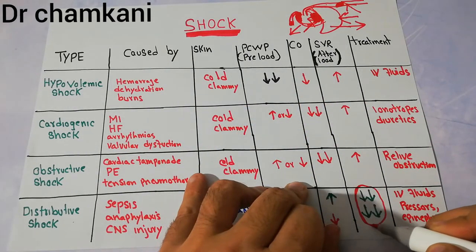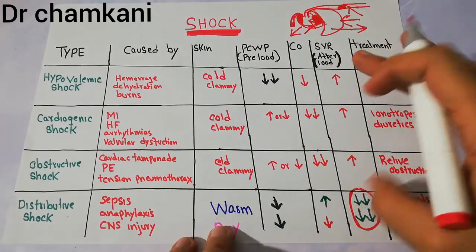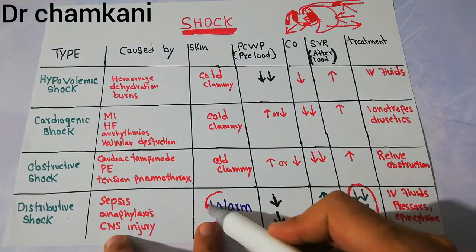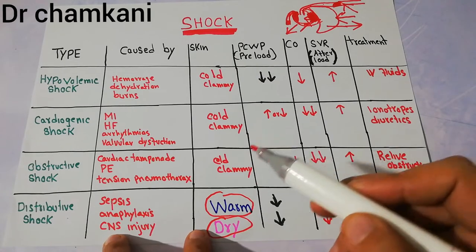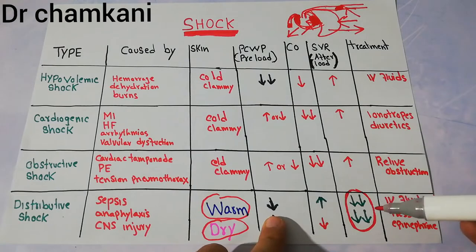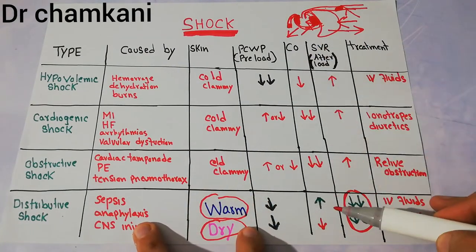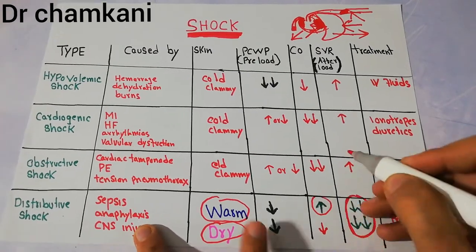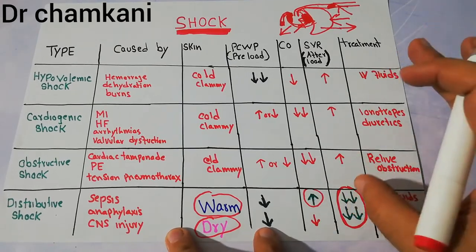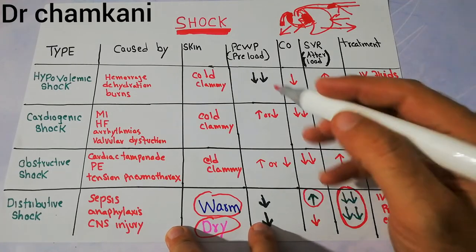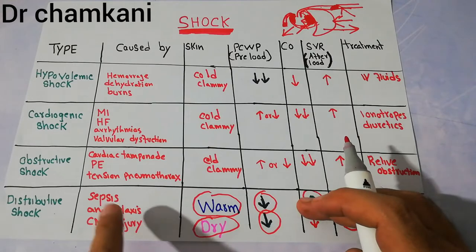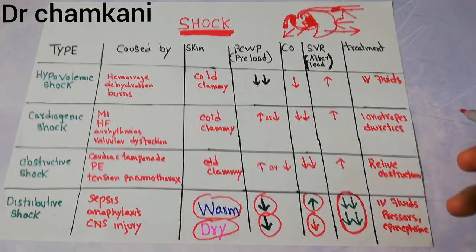Because systemic vascular resistance is decreased, blood flows to the periphery. The skin is warm in sepsis and anaphylaxis, and dry in CNS injury. Cardiac output does not decrease in sepsis — in fact, sepsis increases metabolism, which is responsible for warm skin, high cardiac output, and decreased systemic vascular resistance. The preload is definitely decreased in sepsis, anaphylaxis, and CNS injury. Cardiac output is high in sepsis and anaphylaxis, but decreased in CNS injury.